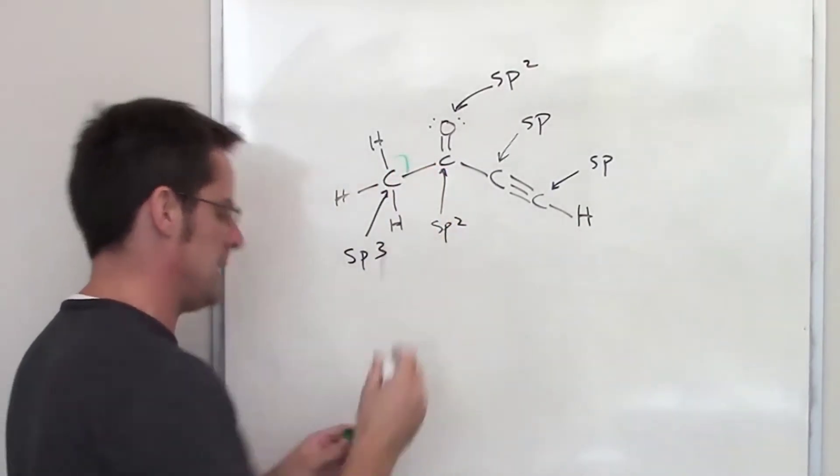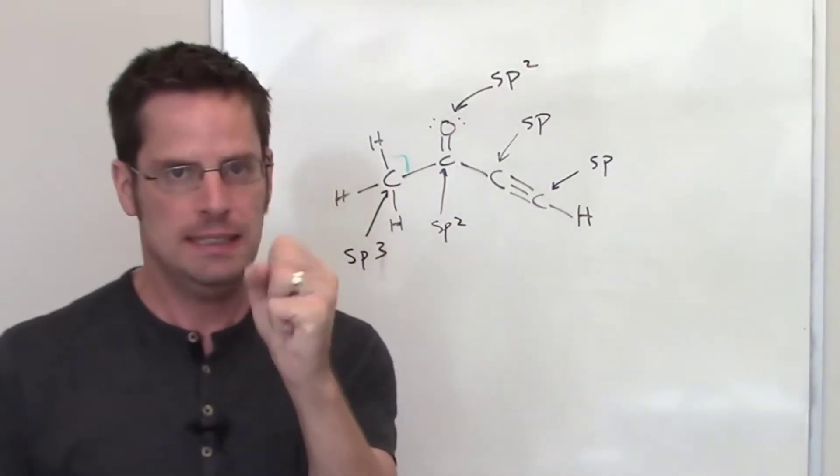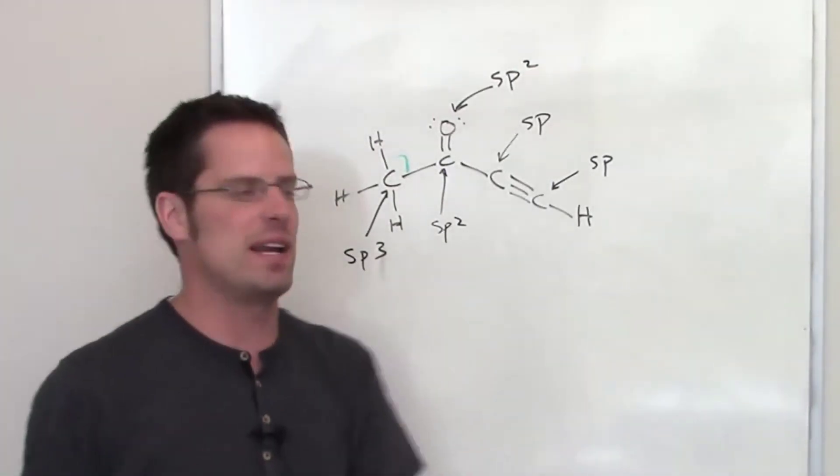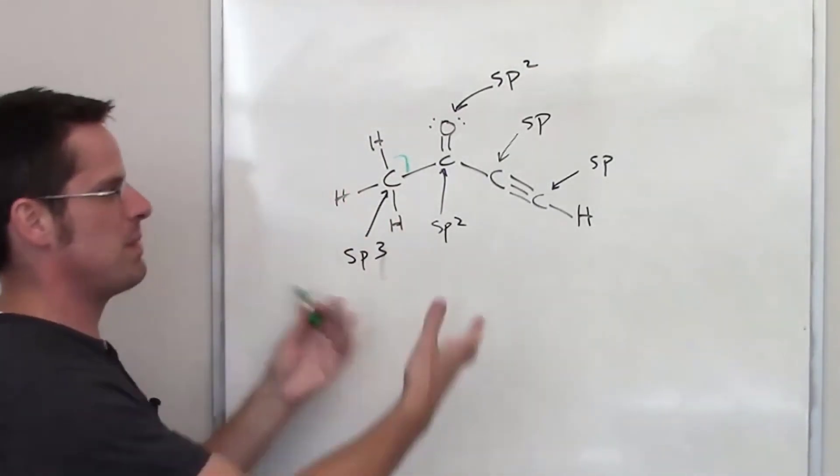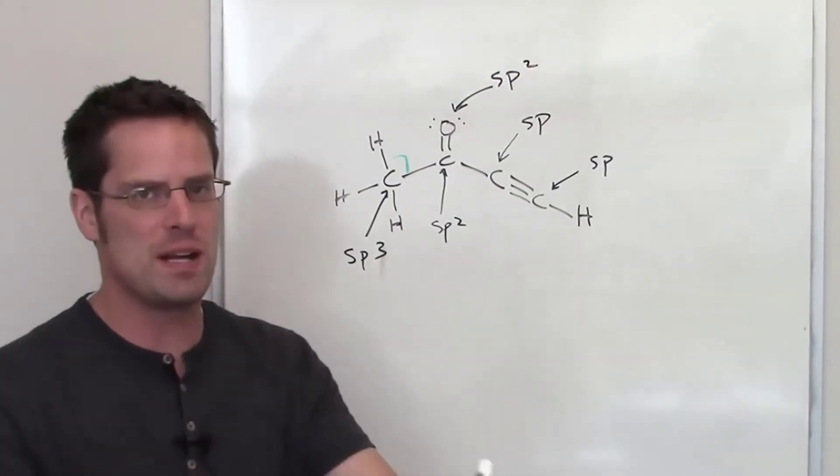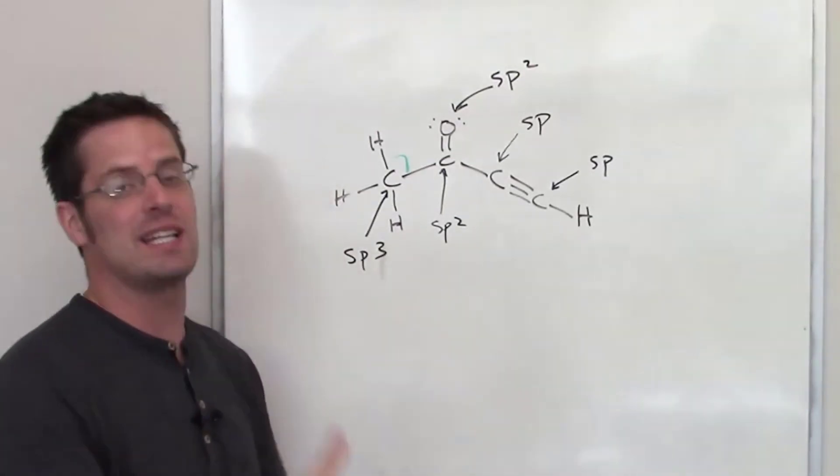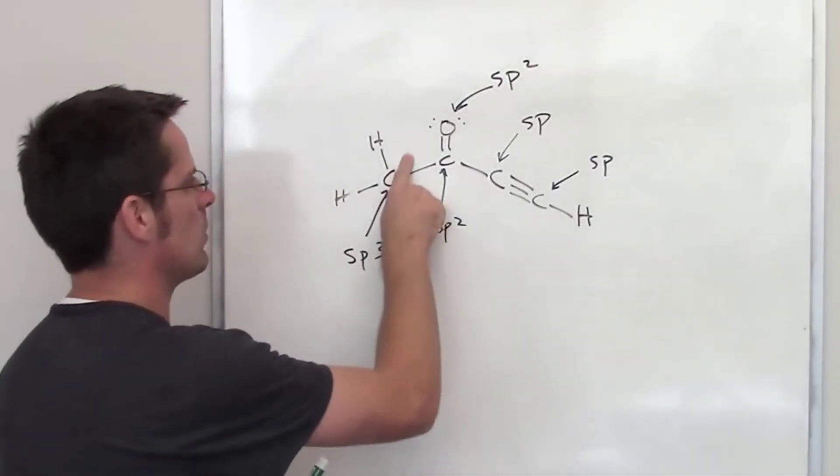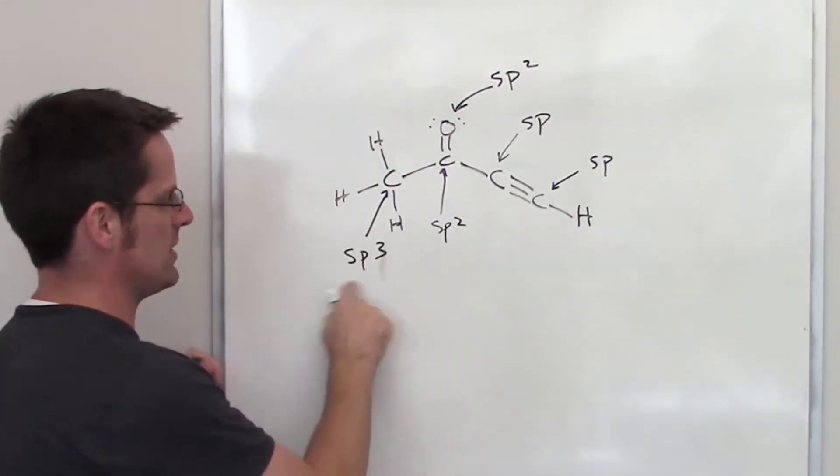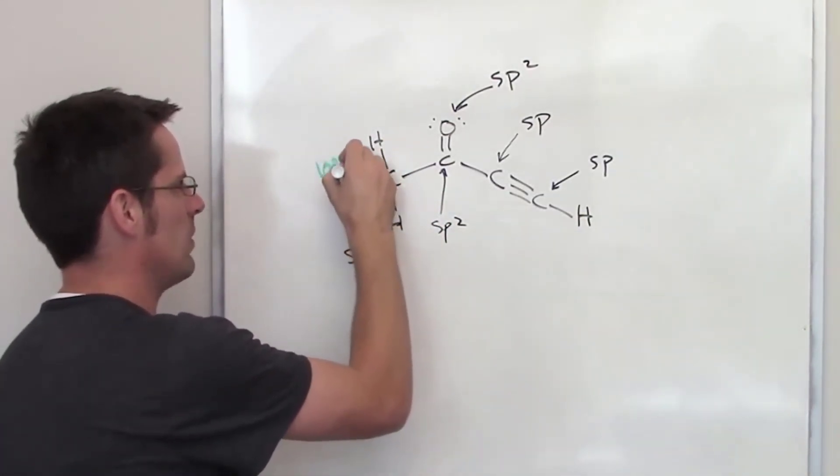degree bond angle. We just drew it that way on paper because paper, the board, is a two-dimensional world. In real life, we're dealing in 3D. The bond angle around any center that's sp3 hybridized is going to ideally be around 109.5 degrees.